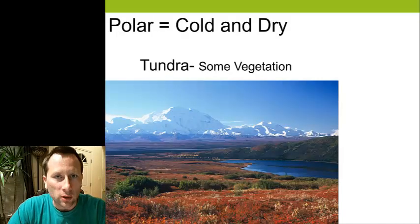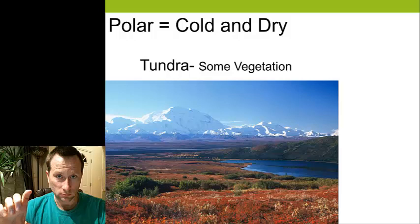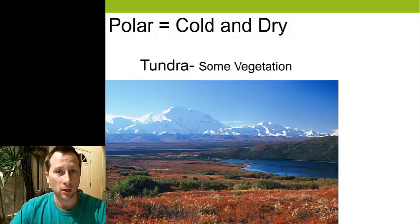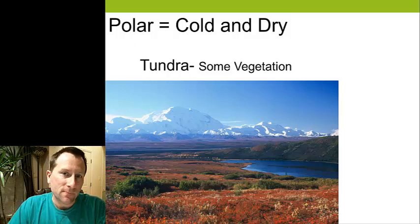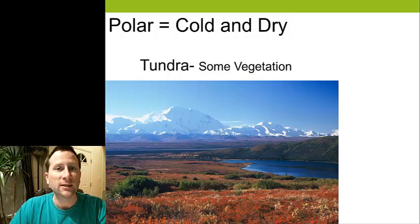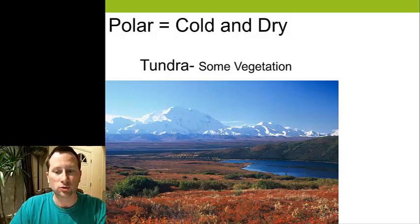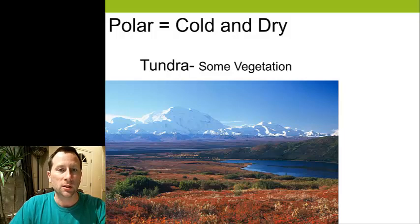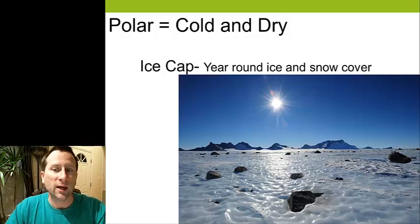If we continue on, we go into the polar category of climates, meaning it's cold and dry. The North Pole and the South Pole are both very dry areas of the Earth. The North Pole is in an ocean so you don't really notice it, but there are parts of the Antarctic that are desert. Further from the actual ice cap, we have what's called the tundra, meaning they get a month or two of above-freezing temperatures. There's still permafrost underneath; only the top foot or so melts, allowing grasses and very small shrubs to grow. The last subcategory of polar is the ice cap, where they have year-round snow and ice.